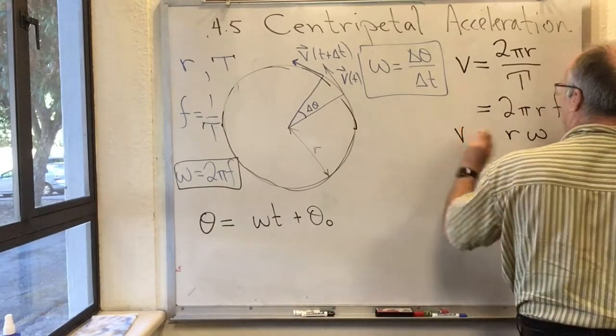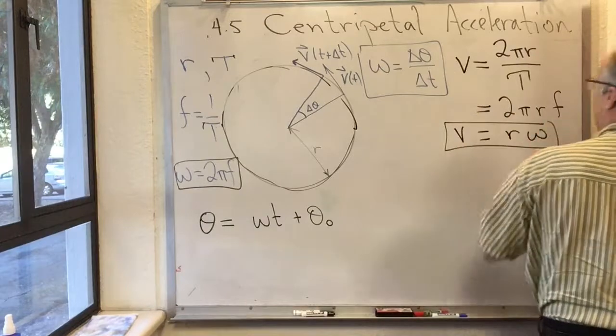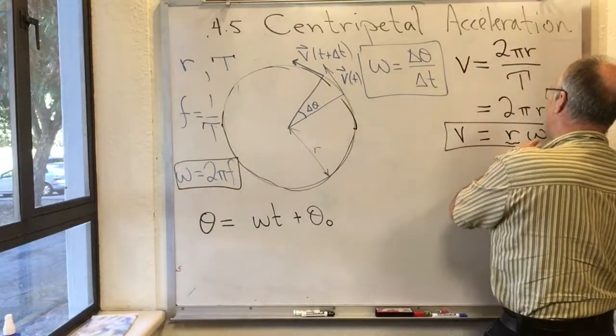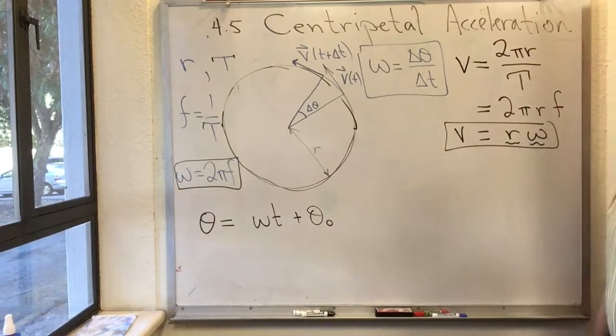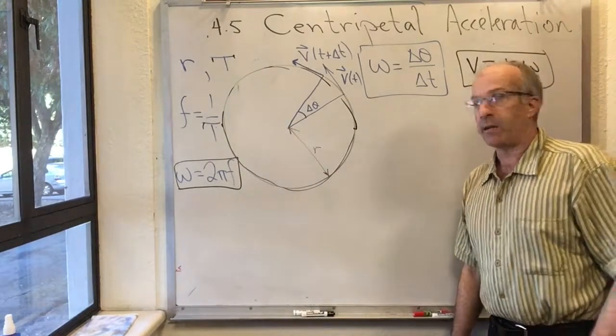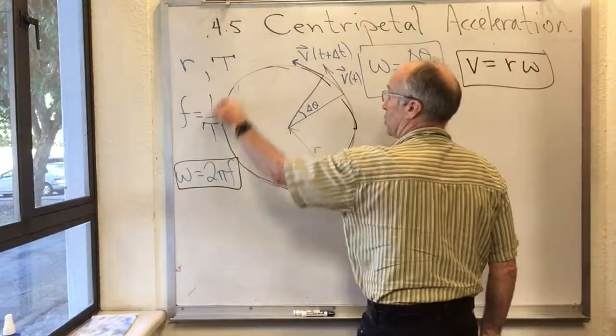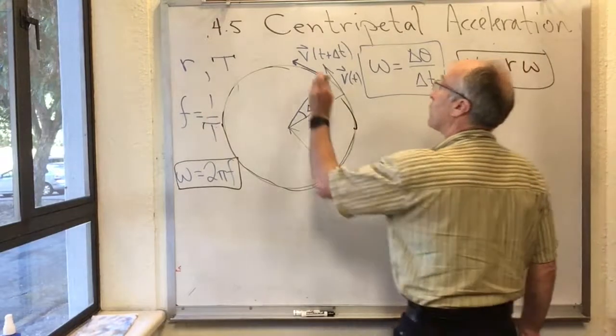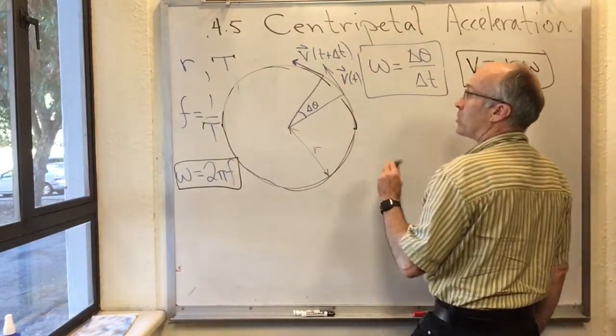So that's one more important result, that the length of the vector V is just the radius times omega. Now we have another thing I want to get. This situation is a situation of constant speed. And yet, the velocity vector is changing.